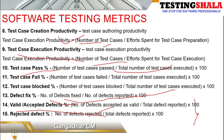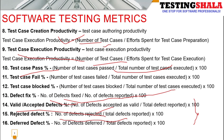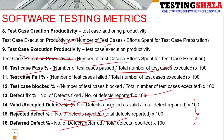The fifteenth metric is rejected defect percentage: number of defects rejected divided by total number of defects logged by the testing team. This gives the percentage of defects rejected — possibly because they are not reproducible, lack information, or lack sufficient data. The sixteenth and final metric is defect deferred: number of defects deferred divided by number of defects logged, giving the percentage of defects pushed to future releases.